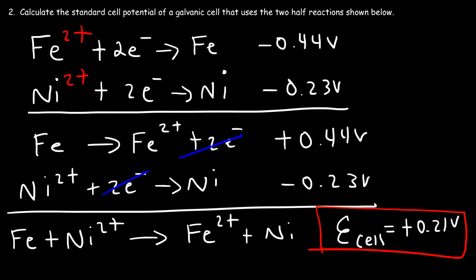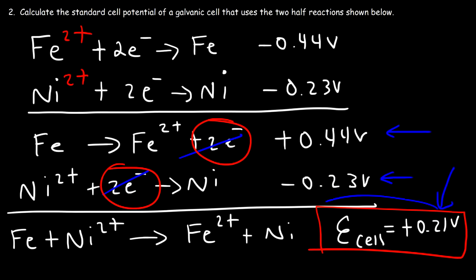To calculate the cell potential of a galvanic cell, adjust the standard reduction potentials so that the electrons cancel. Make sure that occurs. When you add the cell potentials, you need to get a positive answer — or at least zero. Zero is the lowest you can get; you should not get a negative answer.